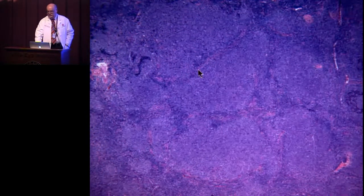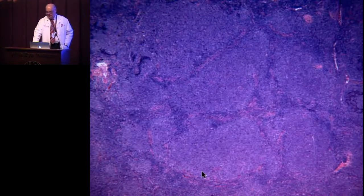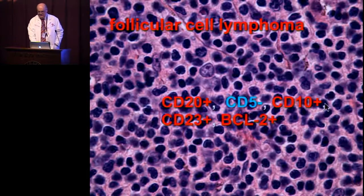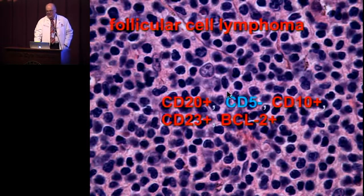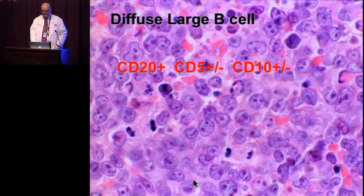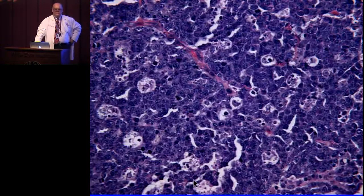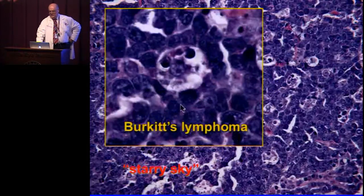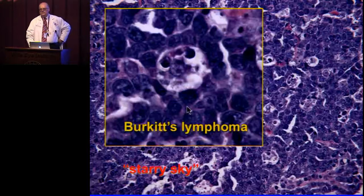BCL2 is normally negative in reactive follicles but is turned on in follicular lymphomas. Large diffuse B-cell lymphoma also occurs. Lymphomas are very uncommon in children, the exception being Burkitt's lymphoma — more common in Africa. The classic starry sky appearance is a high-grade B-cell lymphoma; the stars are tangible body macrophages whose tangible bodies are fragments of apoptotic tumor cells.